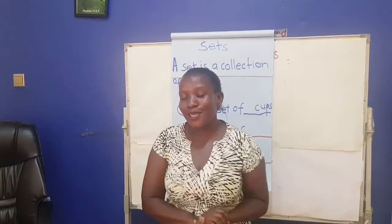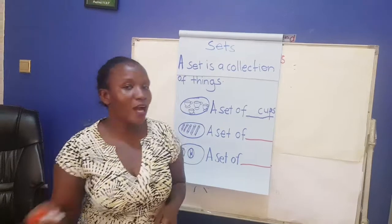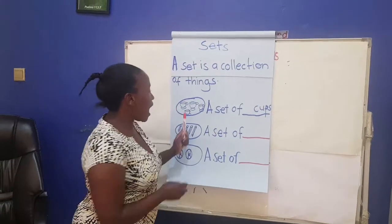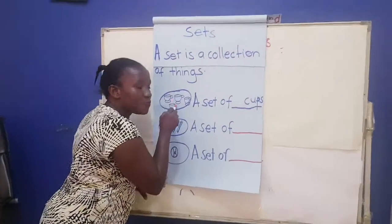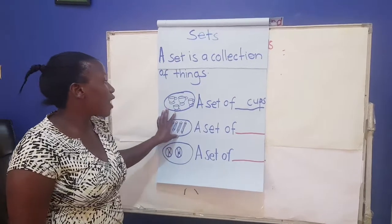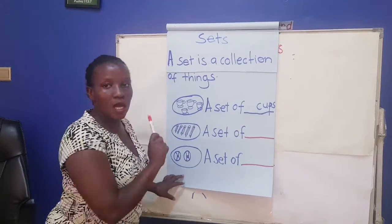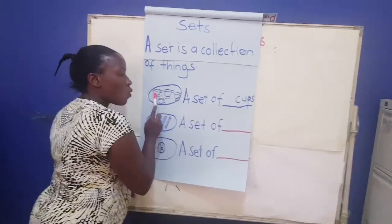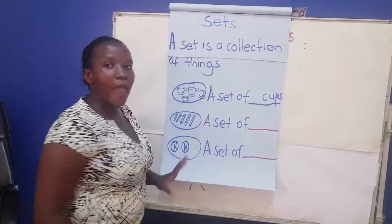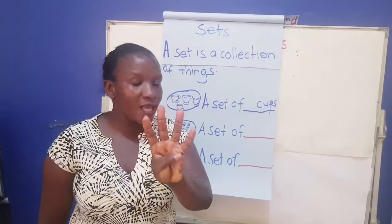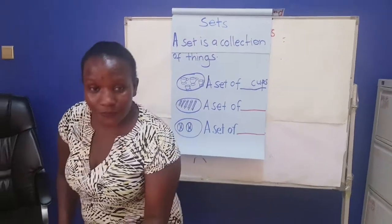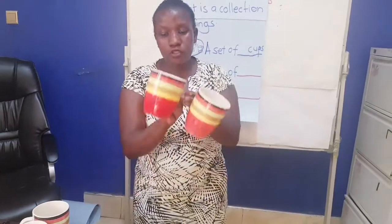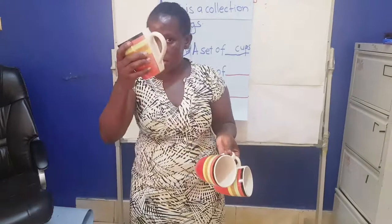Thank you for singing with me. Now today we are going to look at sets. I have my round circle, and in this circle I have cups. Let's count these cups: one, two, three, four — I have four cups.